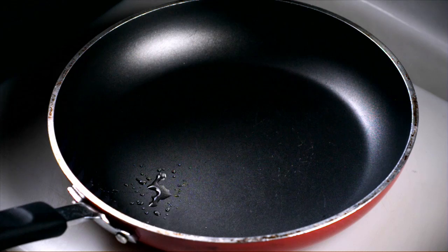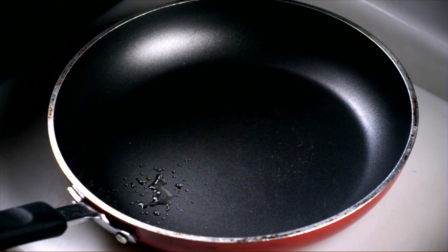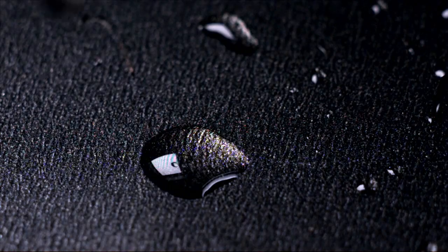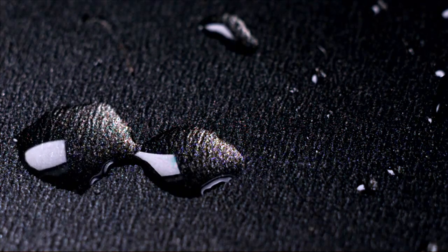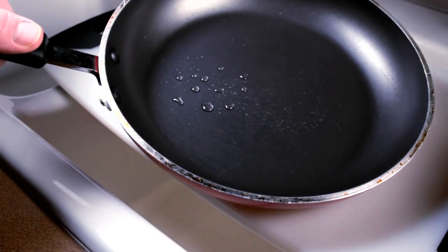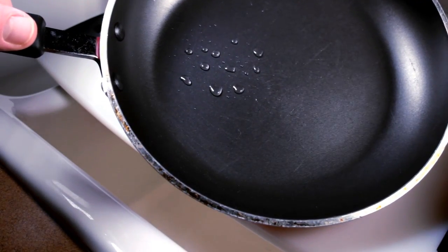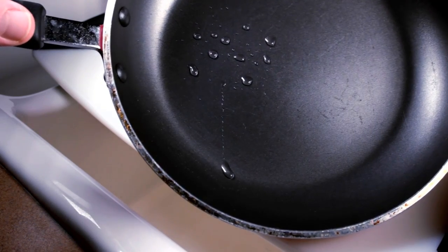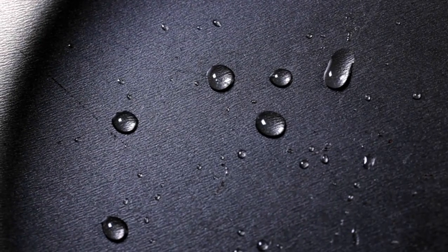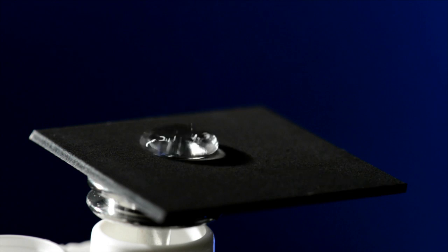Many people think of Teflon as a strong hydrophobic material. However, if you want to get rid of water on a Teflon surface, you have to tilt the surface to about 70 degrees before the water starts to slide off slowly. Our surface requires an extremely small angle, if at all, for water to slide off.